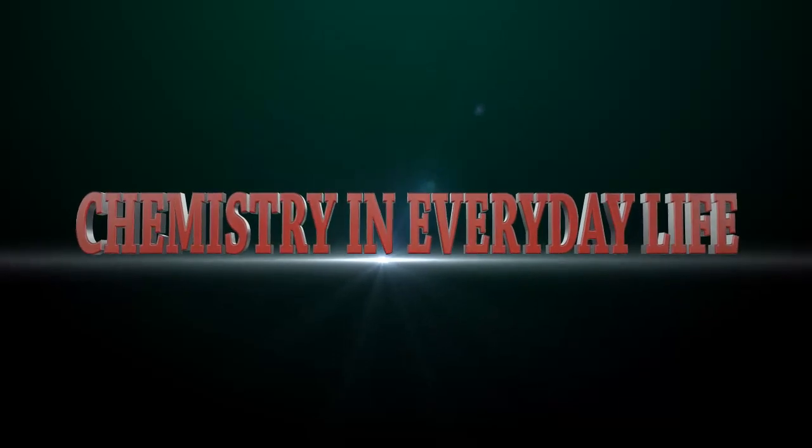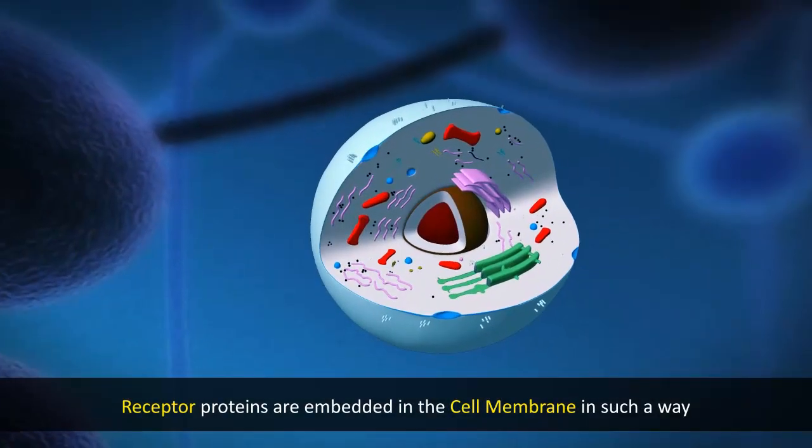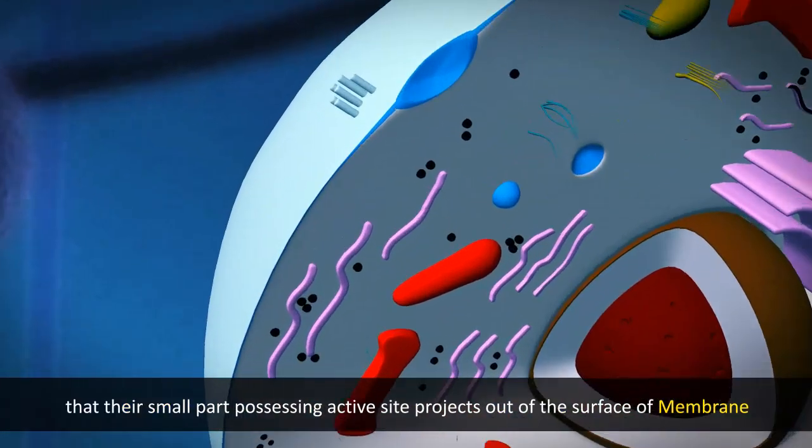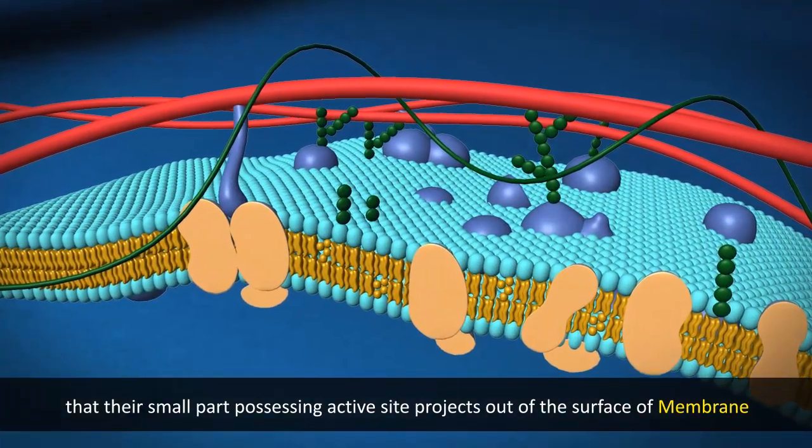Chemistry in everyday life: receptor proteins are embedded in the cell membrane in such a way that their small part possessing an active site projects out of the surface of the membrane.